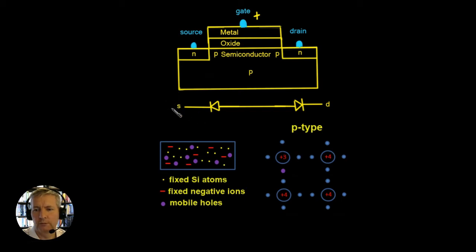So we're never going to be able to get a current flowing between the source and the drain because of these in effect back-to-back diodes and that's the diode here.